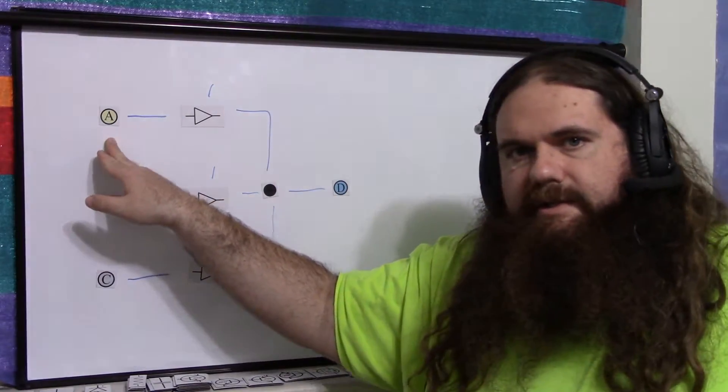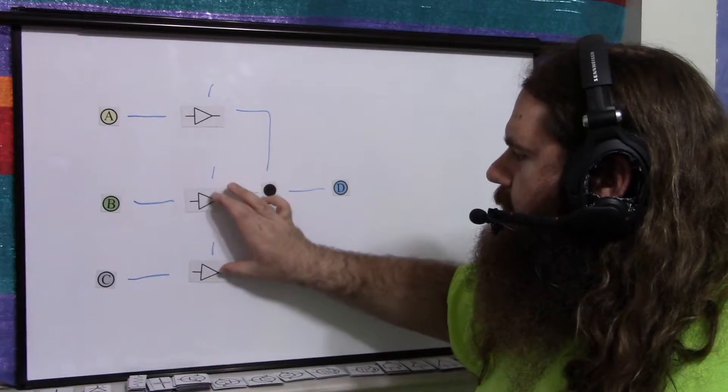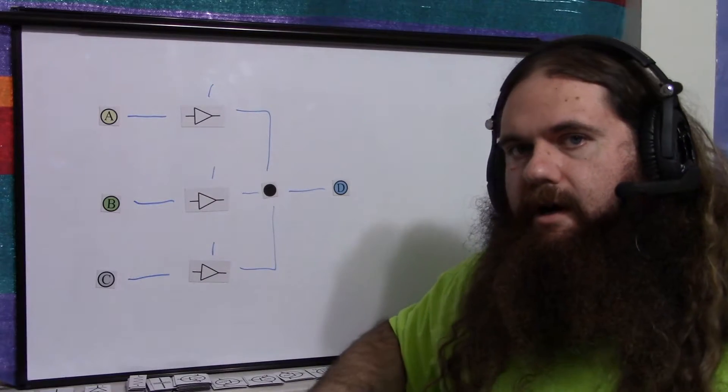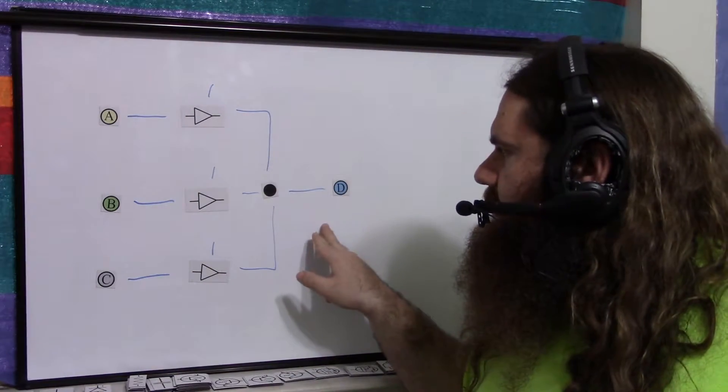So what you can do is say A is active and B and C can hush. So you turn off these two buffers, turn on this buffer, and so you've only got one actual connection to D.